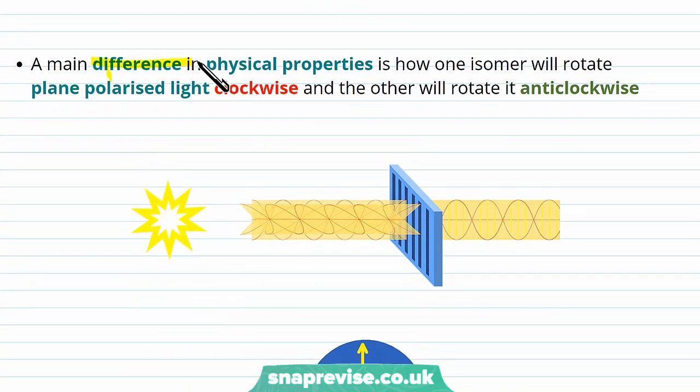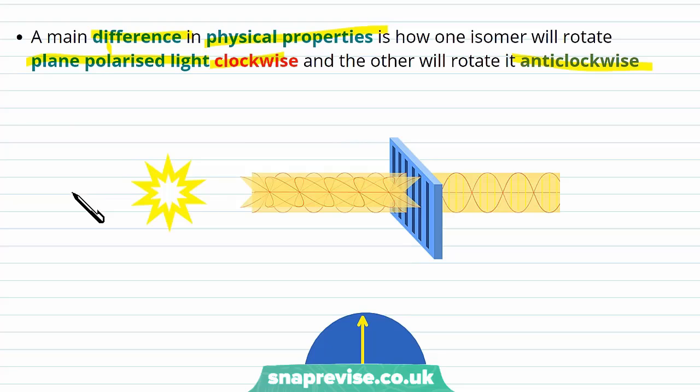A main difference in physical properties, although we said they are largely similar, is that one isomer will rotate plane polarized light clockwise, whereas the other will rotate it anti-clockwise. Now remember, light is made up of lots of different oscillations in many different directions. However, we can pass it through this polarizing filter, and this restricts the direction of oscillation to, in this case, just up and down.